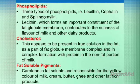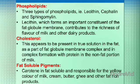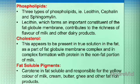The first fat-associated substance is phospholipids. There are three types of phospholipids: lecithin, cephalin, and sphingomyelin. Lecithin forms an important constituent of the fat globule membrane and contributes to the richness of flavor of milk and other dairy products.